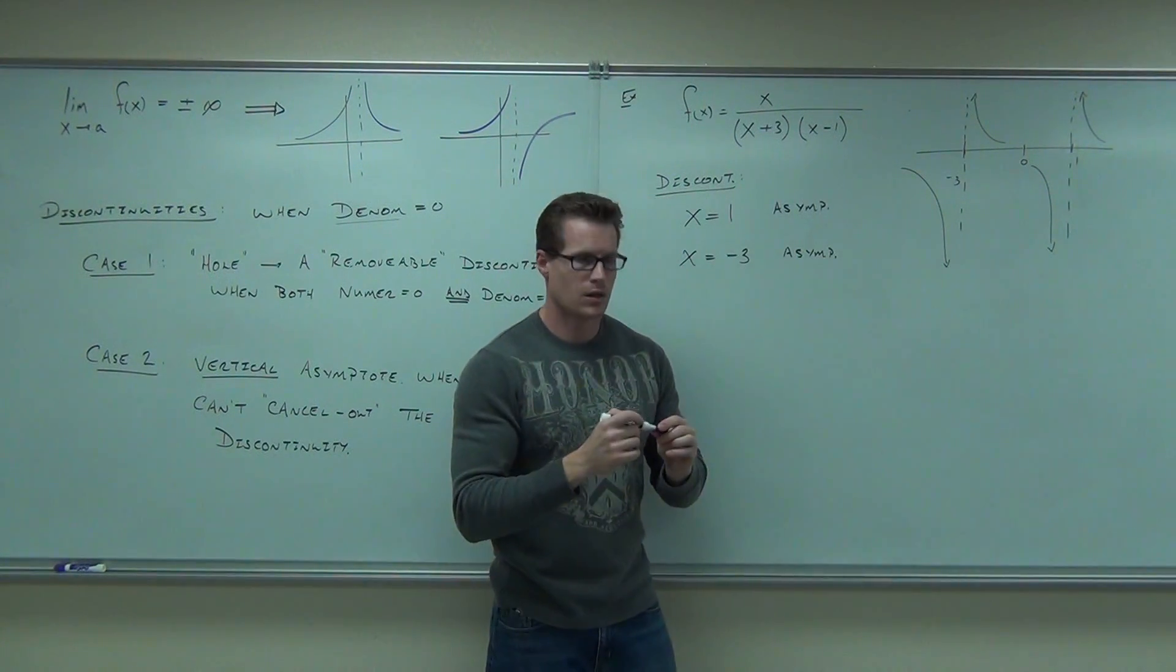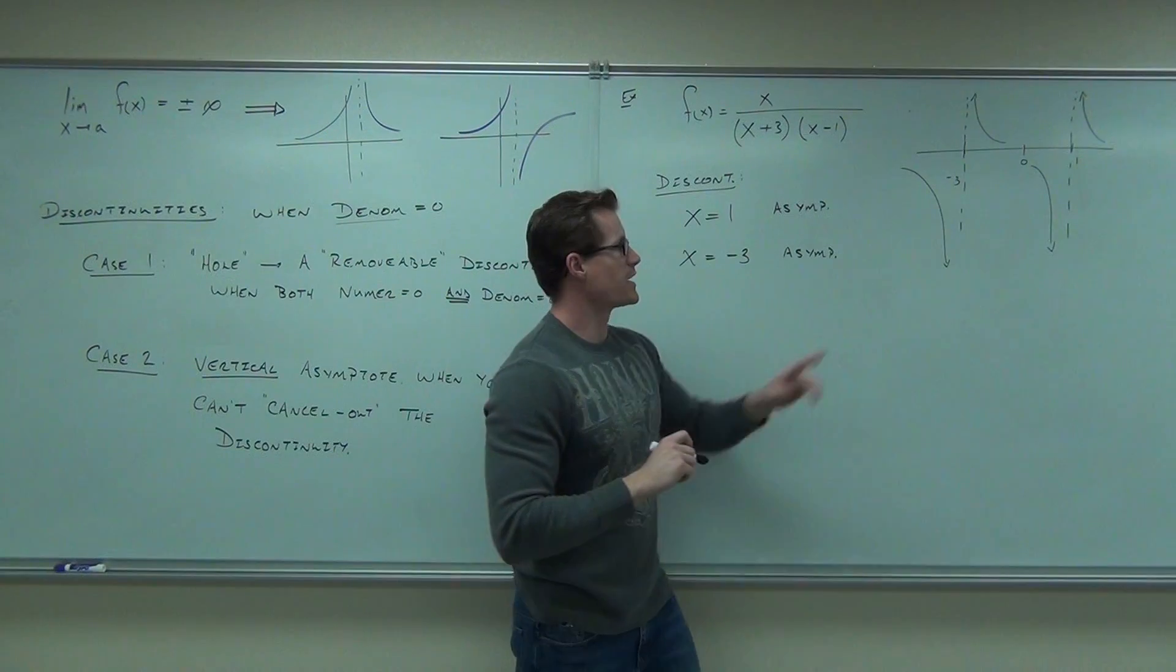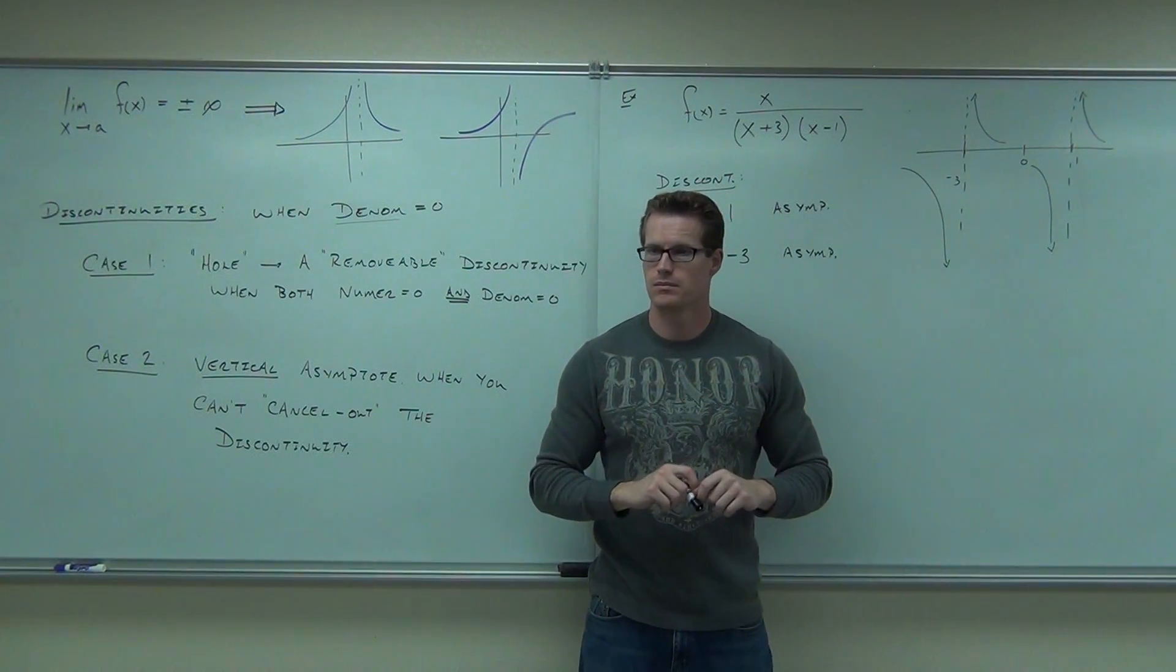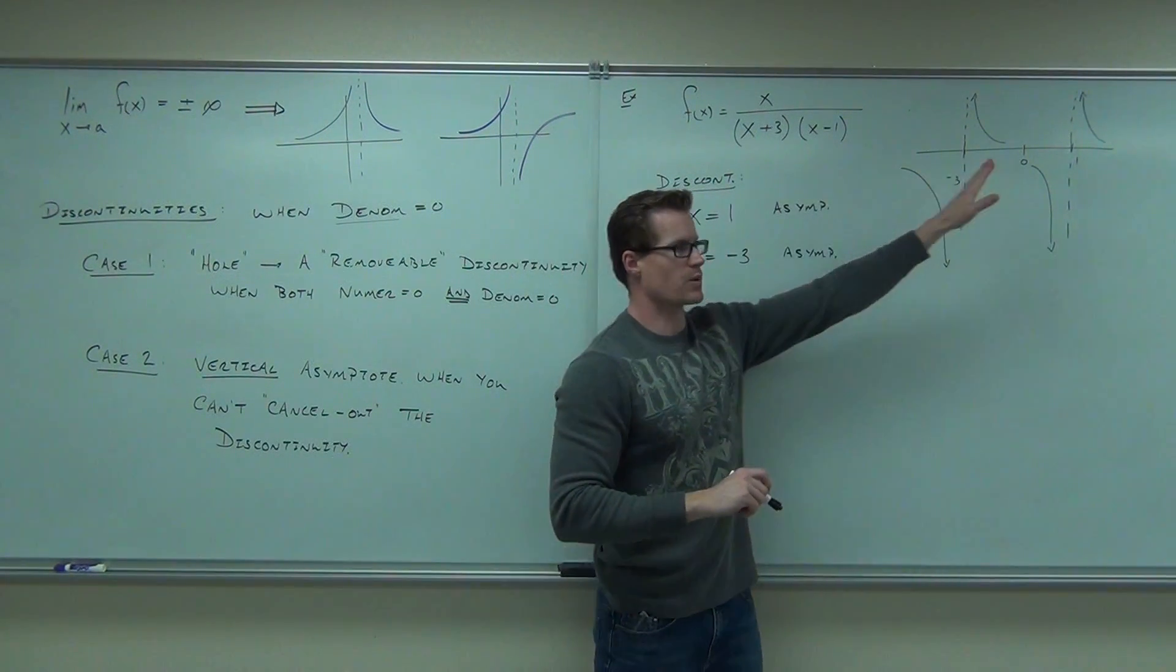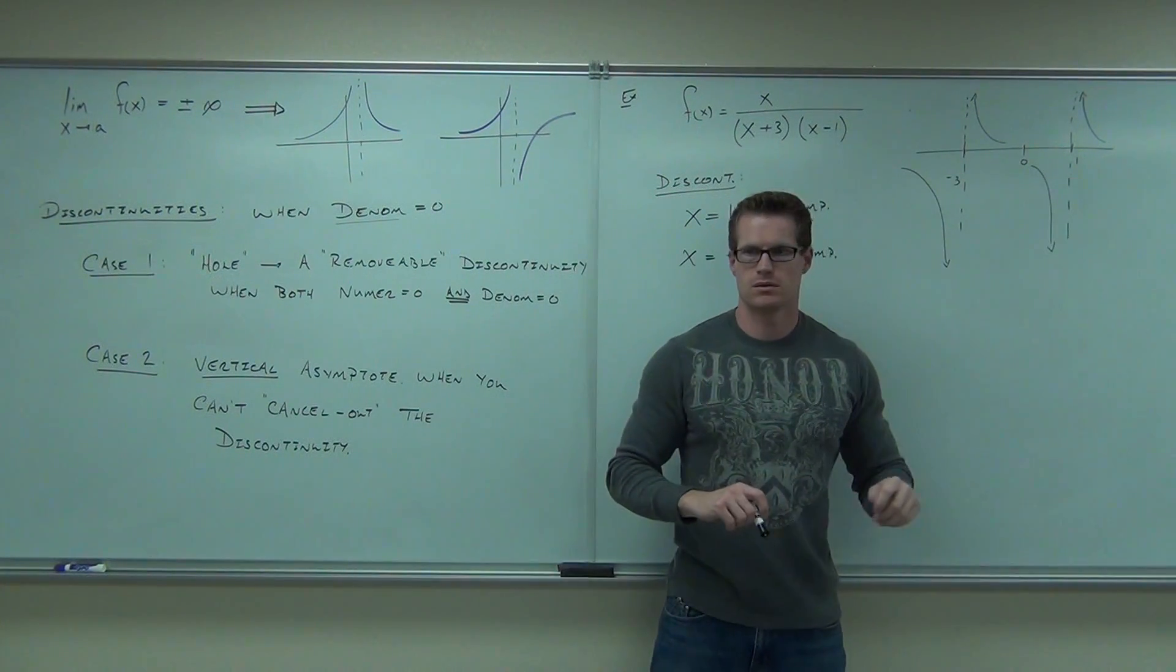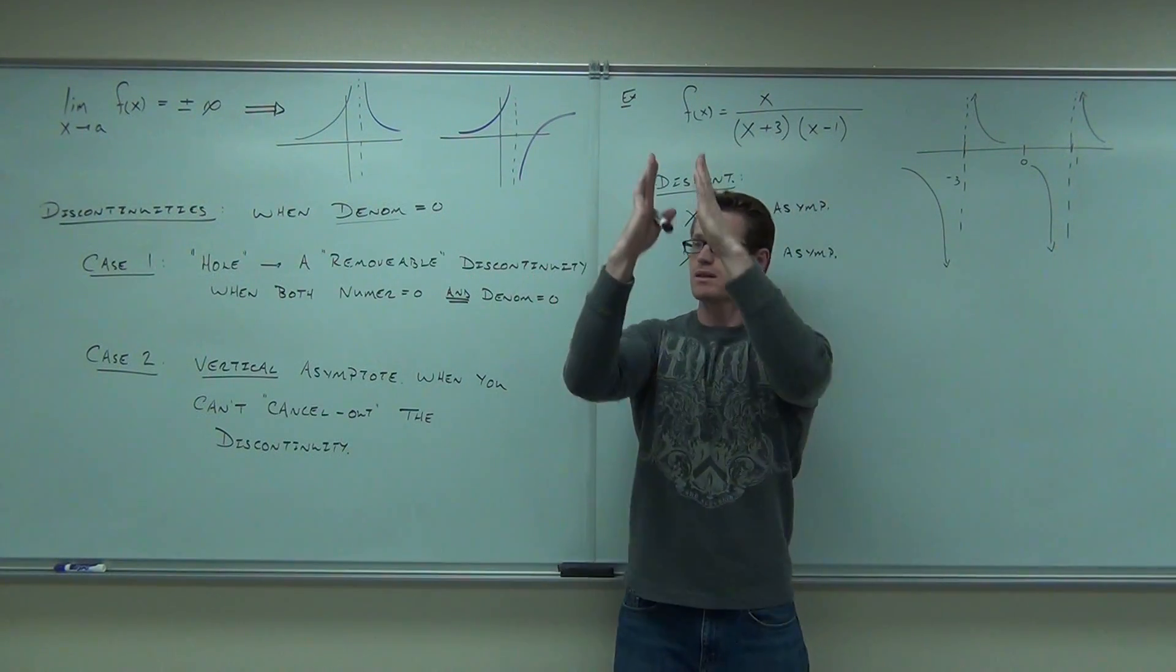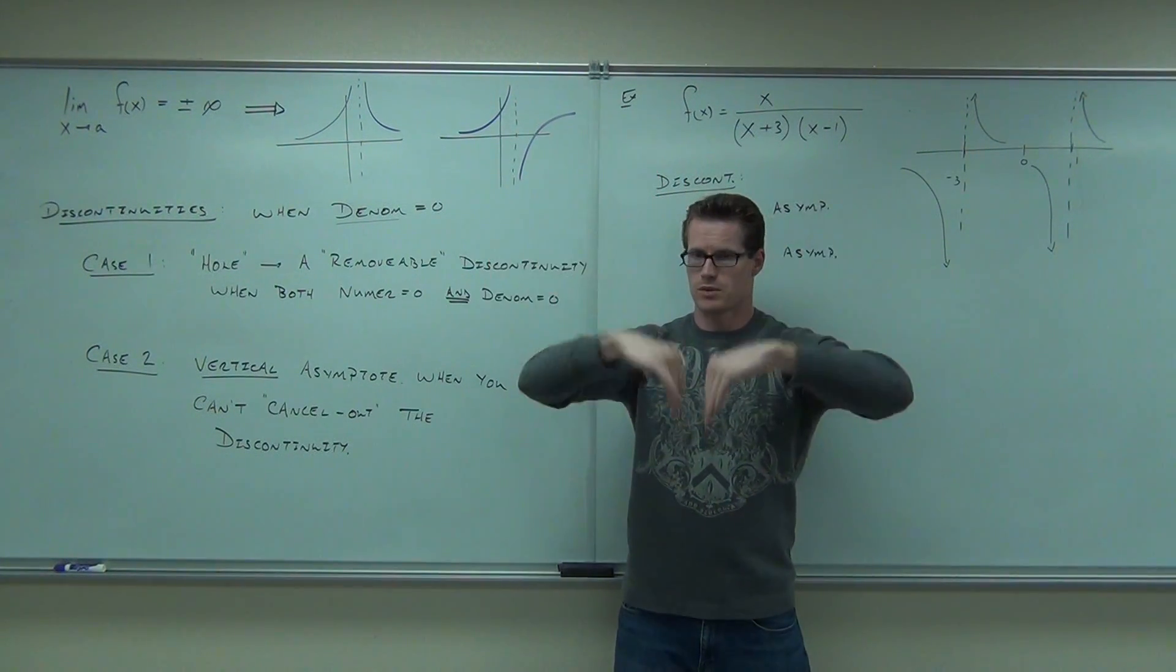Here's my question. Will the limit exist, will the limit exist as we approach negative three? From the left, we're going down. From the right, we're going up. Does it exist? Heck no. How about at one? Nope. From the left, we're going down. From the right, we're going up. If they had been like this, both going up? Both going down? Sure.